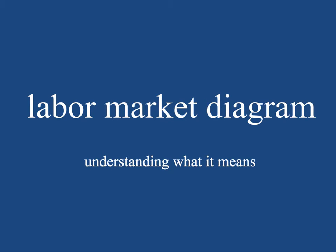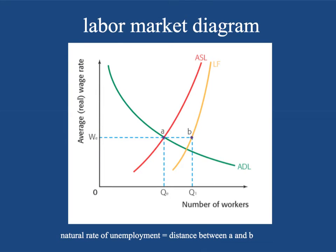Hey everybody, I hope you're doing well today. Let's take a look at the labor market diagram — a pretty critical diagram to understand for your explanations and understanding of what unemployment means, explaining the different kinds of unemployment, and being able to represent them in a diagram. Check out the labor market diagram. You have a really simple aggregate demand for labor curve, and you have an aggregate supply of labor curve.